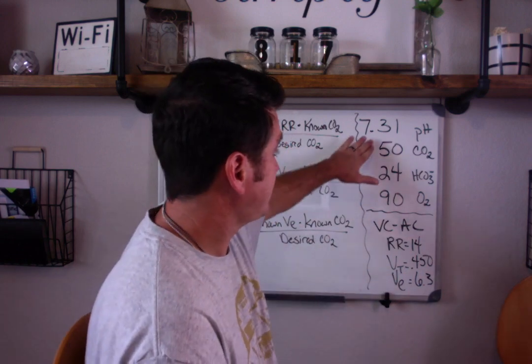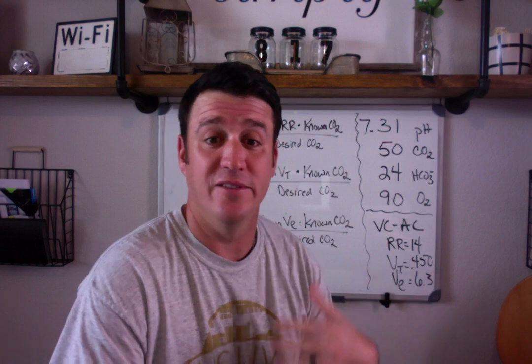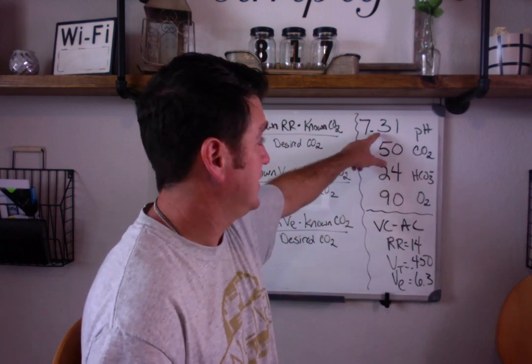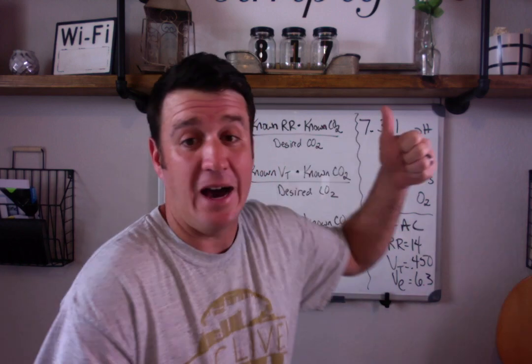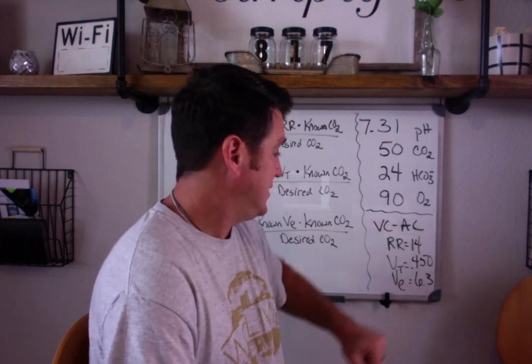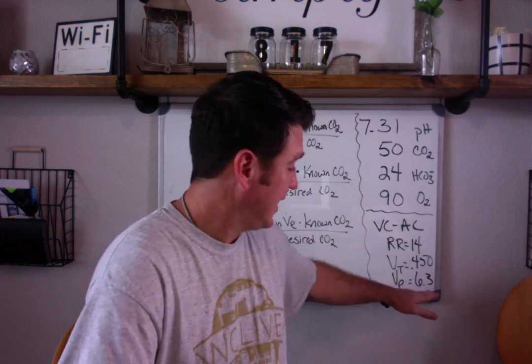When you look at this blood gas, it's obvious that this person is not effectively removing CO2. We have an uncompensated respiratory acidosis causing a pH of 7.31 and our CO2 is high. The patient is currently on volume control AC, a rate of 14, a tidal volume of 450. The patient is not breathing above the ventilator, and that gives us a minute ventilation of 6.3.